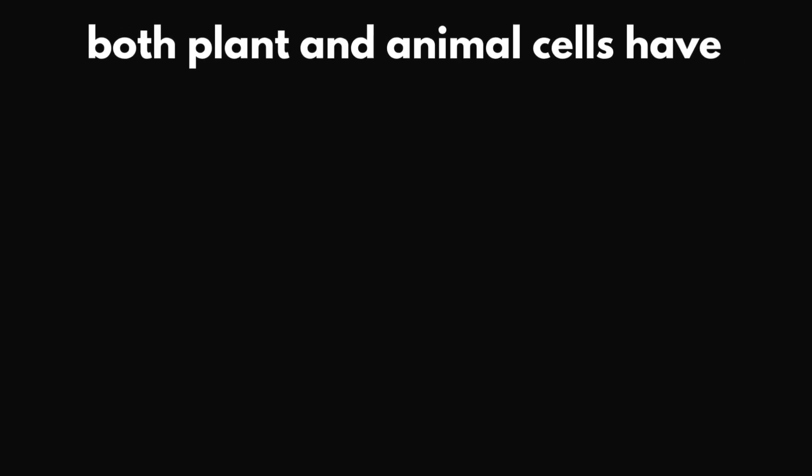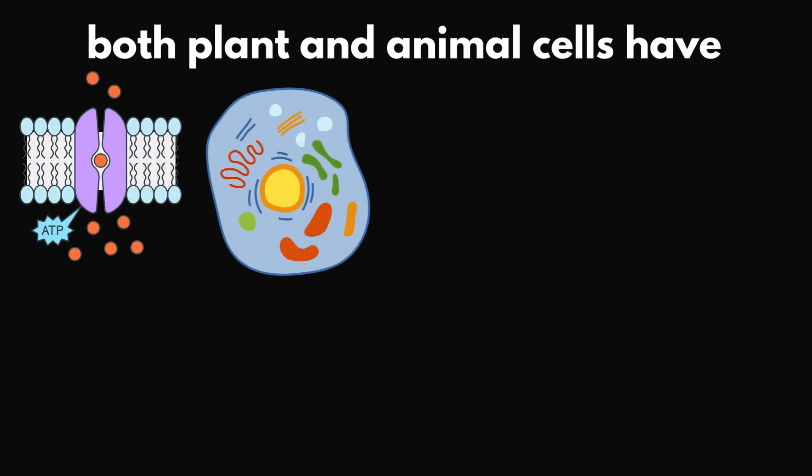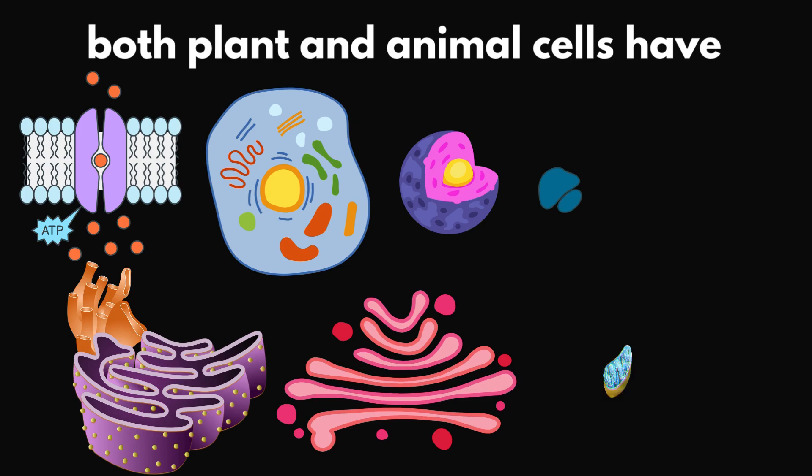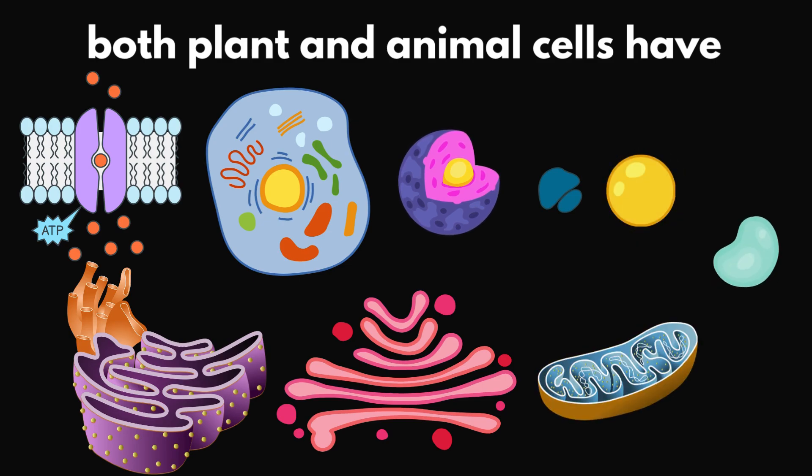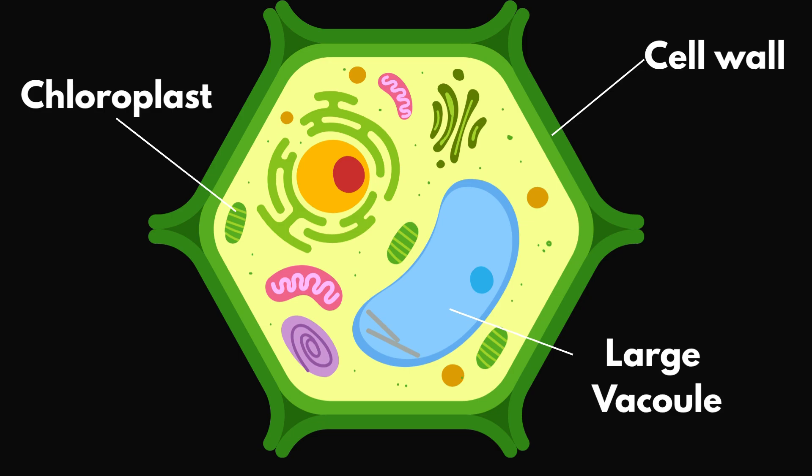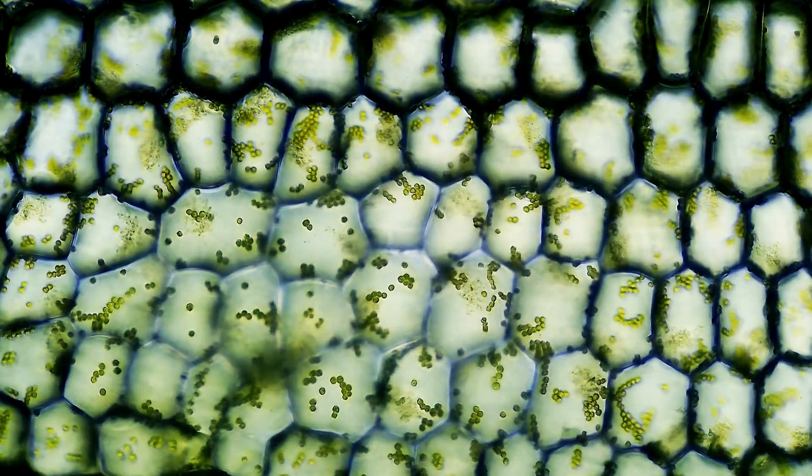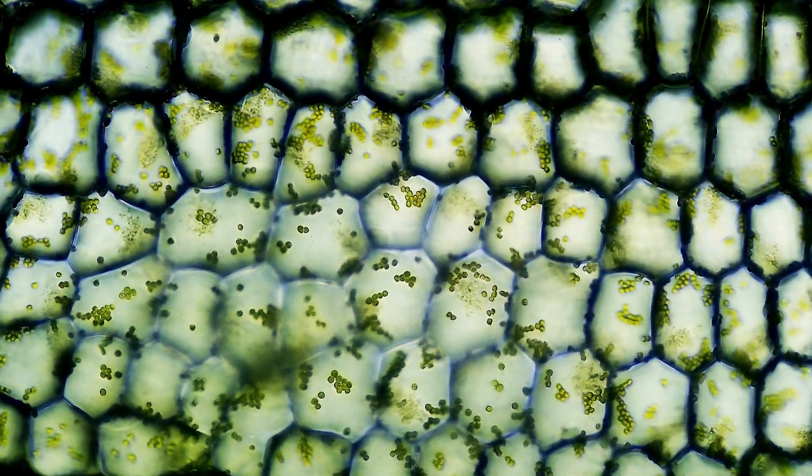So let's quickly zoom out and compare. Both plant and animal cells have membranes, cytoplasm, a nucleus, ribosomes, ER, Golgi apparatus, mitochondria, lysosomes and vacuoles. But plant cells have a cell wall and chloroplasts and their vacuole is much larger. That's why plant cells look more rectangular under a microscope, while animal cells are more rounded and flexible.